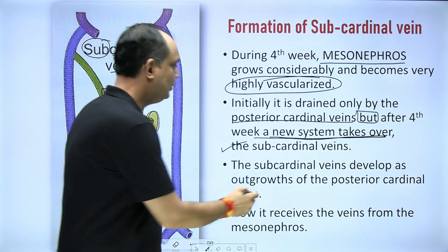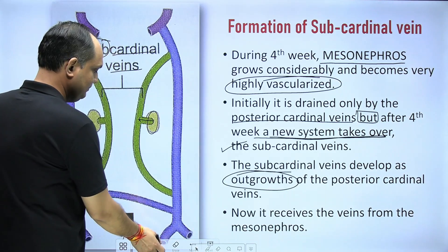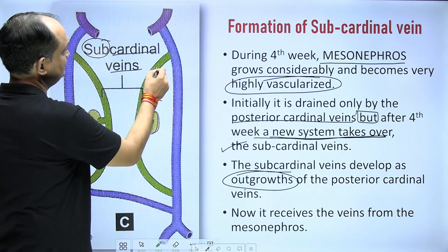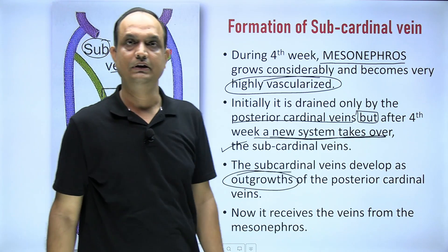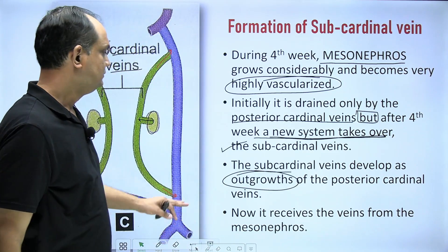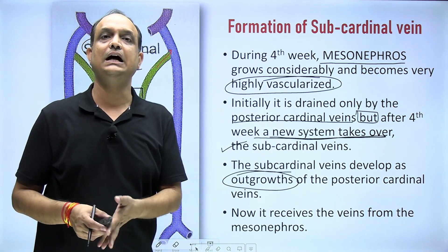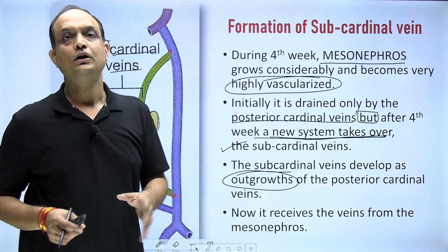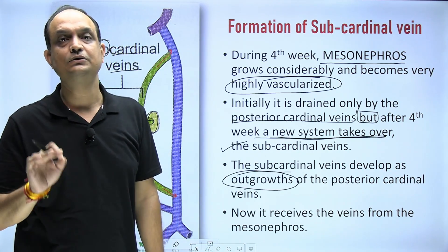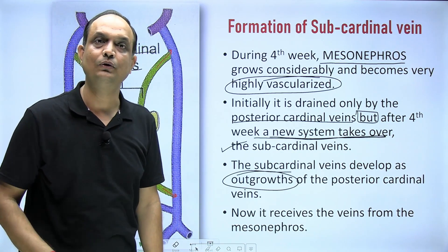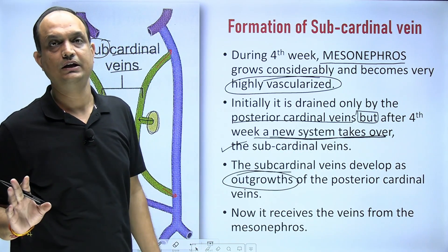The sub cardinal veins develop as an outgrowth of the posterior cardinal vein, so they remain connected with the posterior cardinal vein. They then receive drainage from the mesonephros. In summary: sub cardinal veins are the veins which drain the mesonephric kidneys in the embryo, and they develop as an outgrowth of the posterior cardinal veins.